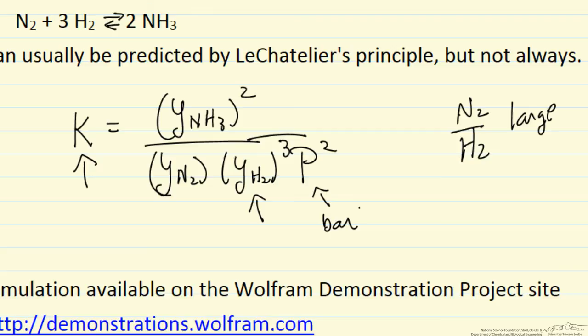So the equilibrium has to have some ammonia react to increase the hydrogen to satisfy the equilibrium expression, so it violates the behavior we expect from a simple application of Le Chatelier's principle. It's an exception, happens because we have three moles of hydrogen to one mole of nitrogen reacting.